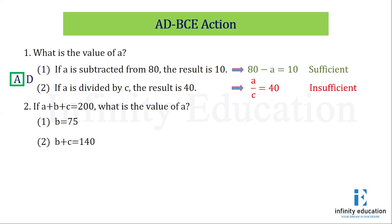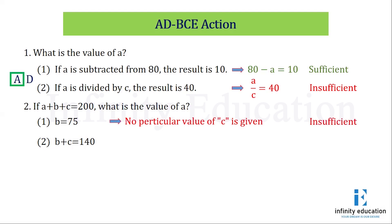Let's see question number 2. A plus B plus C equals 200. What is the value of A? We can see in the same equation there are three unknown variables: A, B, and C. We need to know the value of A, so we should know the values of B and C. Looking at statement 1, B equals 75, but no particular value for C is given. Since I know the value of B but not C, I cannot find the value of A. Hence, it is insufficient.